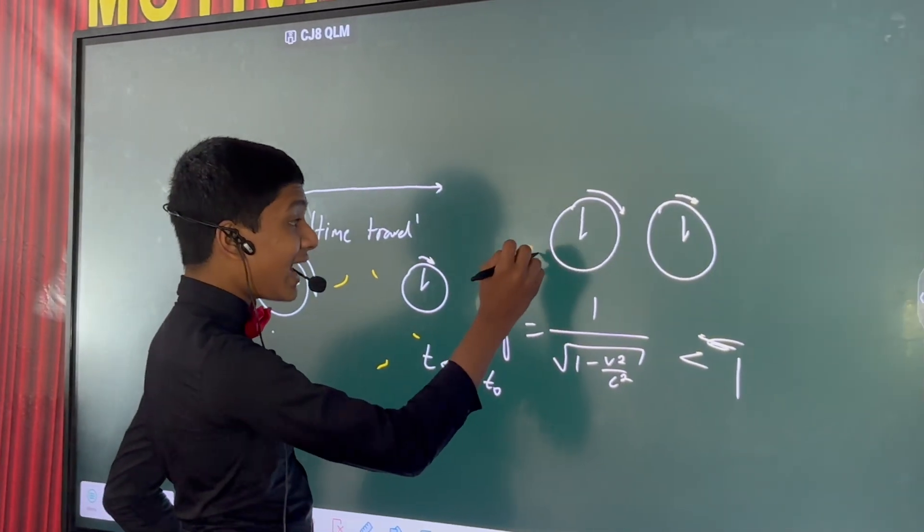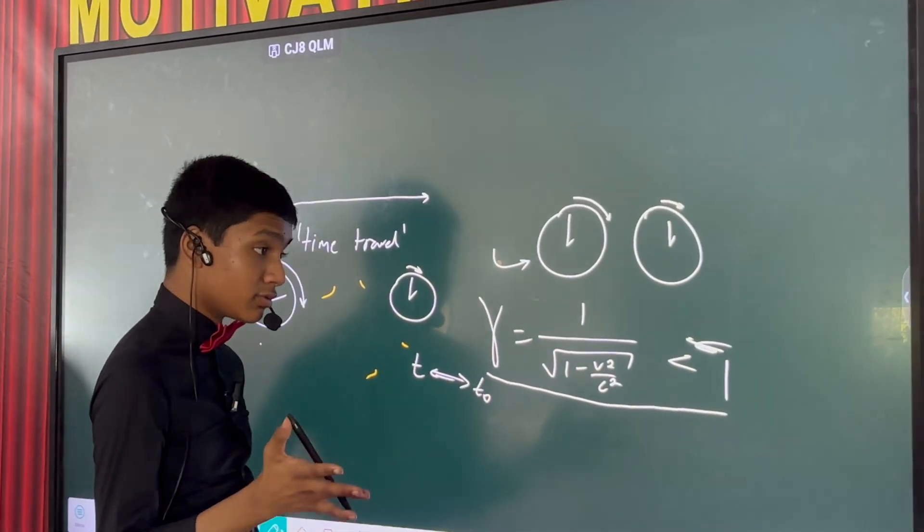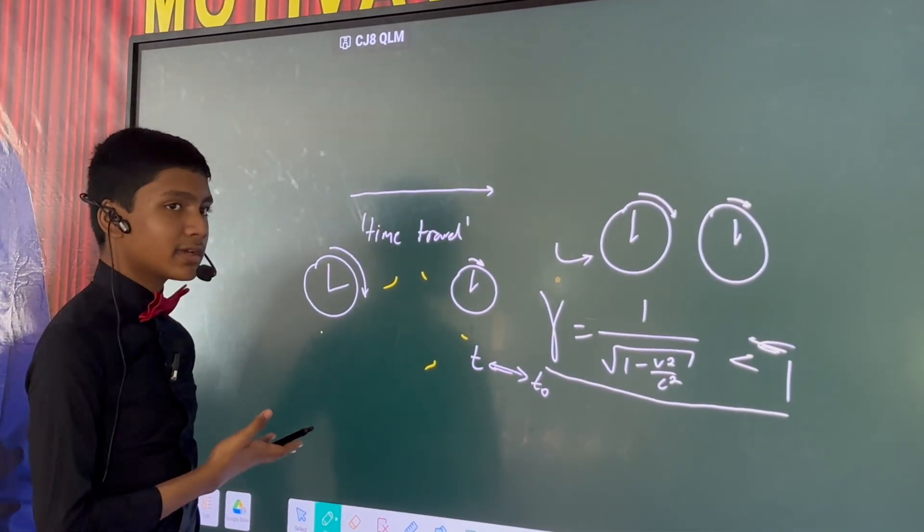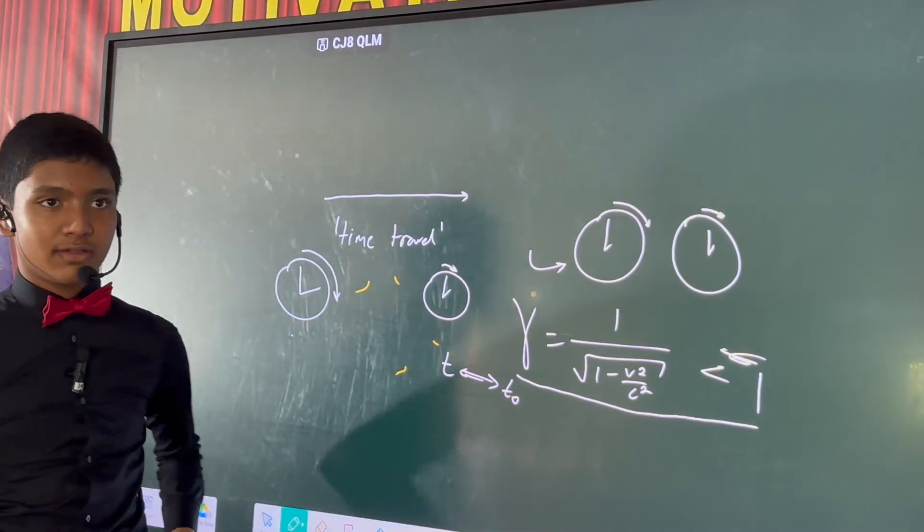So that's essentially the big problem. Because you cannot make your time go faster than other people's time, because the gamma factor is limited to be greater than or equal to one, you cannot ever time travel to the past in light speed, which is kind of sad, but it unfortunately illustrates it.